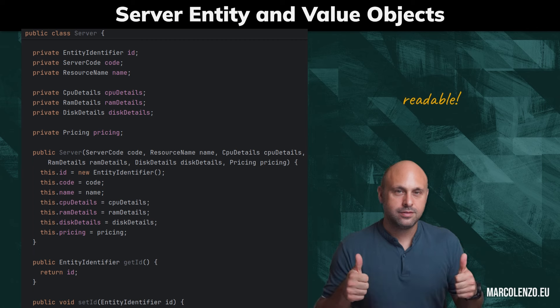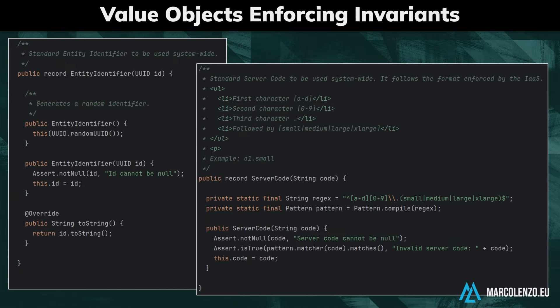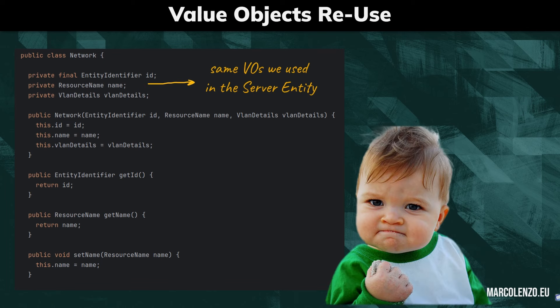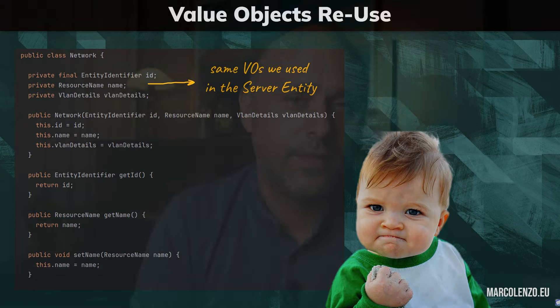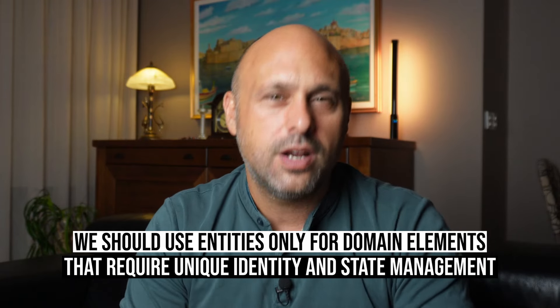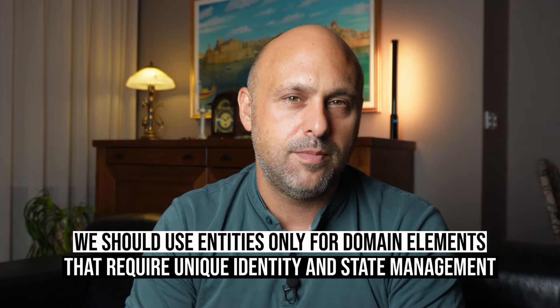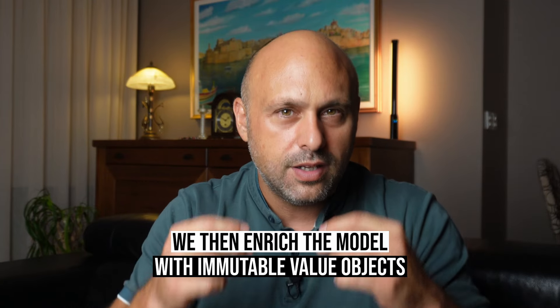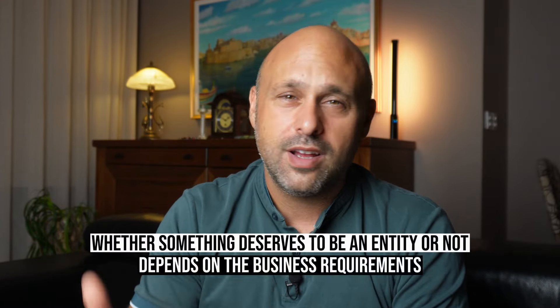Here is the same class refactored to use value objects. Not only have we improved its readability, but all invariants are now validated in the relevant classes. For instance, we enforce specific formats for the entity identifier, server code, and resource name in their constructors, while also ensuring they are never null. By placing the logic where it belongs, we are able to reuse it across the system. If we need to enforce standard identifiers and resource names for all our entities, we can simply reuse the same value objects, as demonstrated in this network entity. This is why we should use entities only for those elements of our domain that require unique identity and state management. We can then enrich the model with immutable value objects, which help group related attributes and enforce business rules consistently across the entire system.